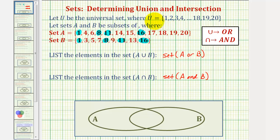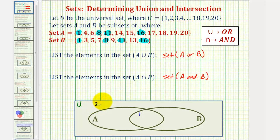Now we'll go through all the elements in the universal set and place them in the Venn diagram. So again, this region here is the universal set. Number one is in both set A and B, so it must be in this overlapping region. Two is not in set A or B, but it is in the universal set, so it's somewhere out here. Three is only in set B, so it has to be in this region here — it can't be in the overlapping region, because that region is for elements in both set A and B.